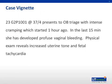We'll start with a case vignette. Our first patient is a 23-year-old, gravida 2, para 1001, at 37 weeks and four days gestational age, who presents to labor and delivery triage with intense cramping, which started approximately one hour ago. In the last 15 minutes, she's developed profuse vaginal bleeding. Her physical exam reveals increased uterine tone and fetal tachycardia.